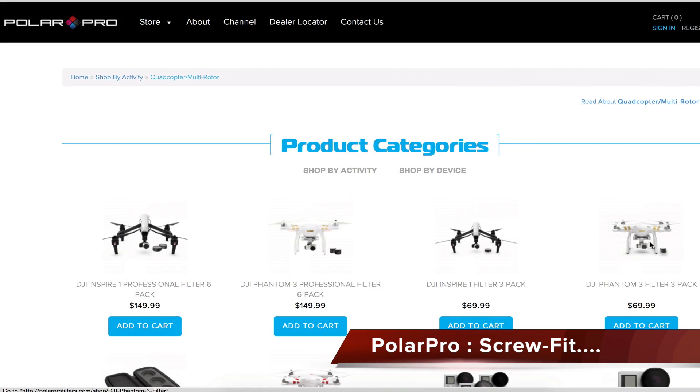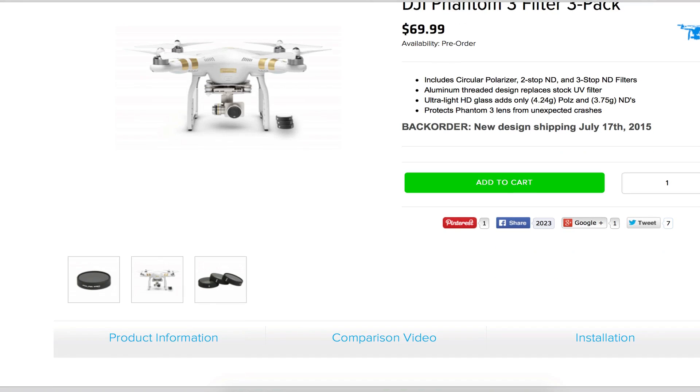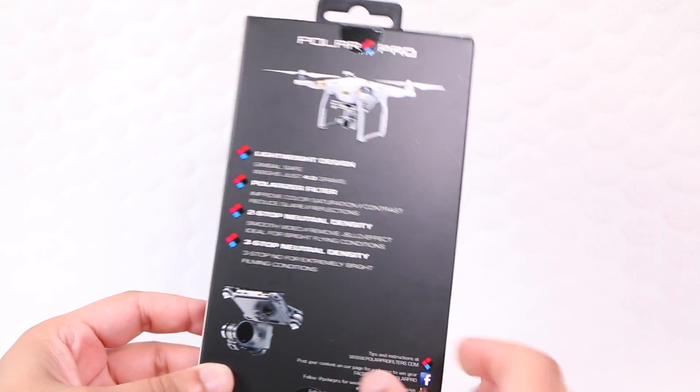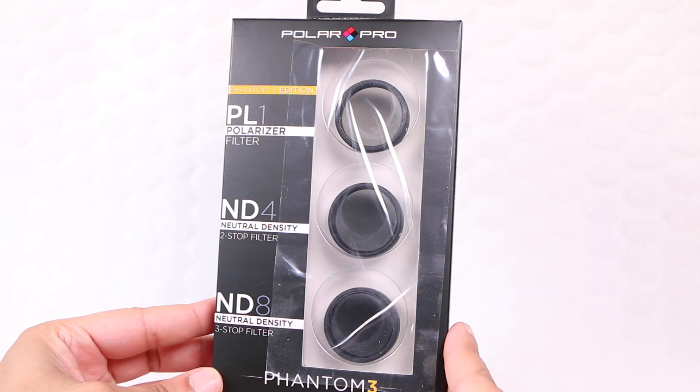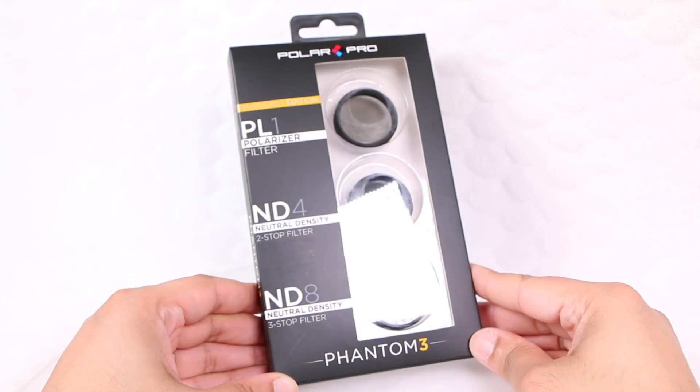Another big player in the GoPro filter and accessory market, Polar Pro, have also developed a filter set for the DJI Phantom 3, although comprising a screw fit design over the standard push fit. Available in a multi-pack set, users receive the three most commonly used filters: a polarizer, an ND4, and an ND8 filter, used depending on the amount of light users wish to reduce.